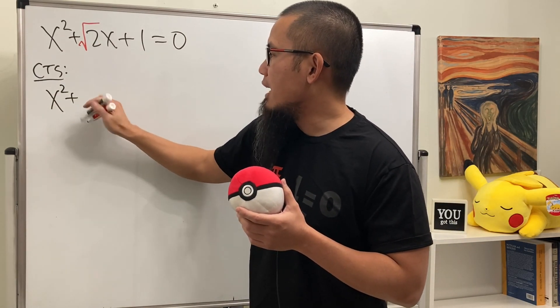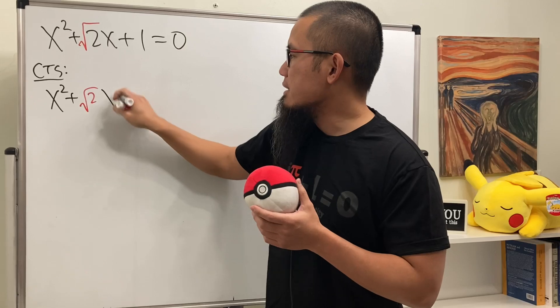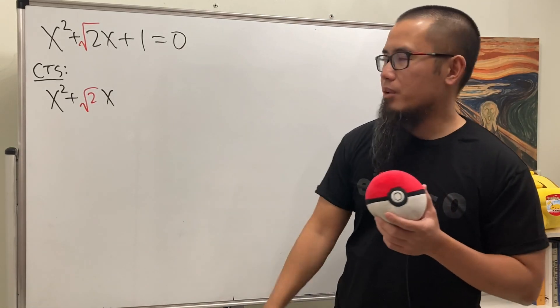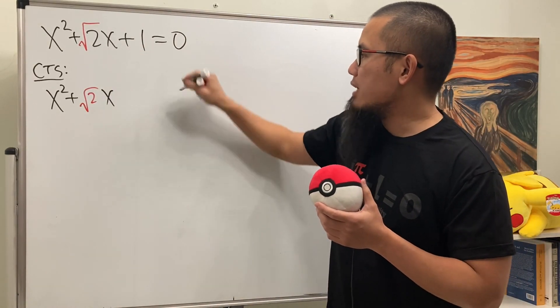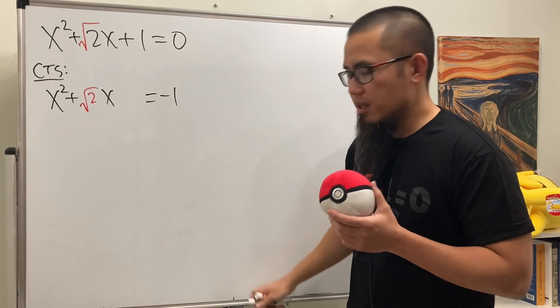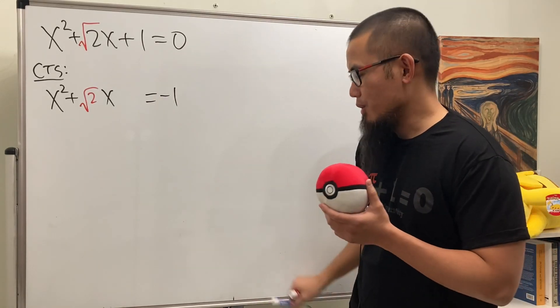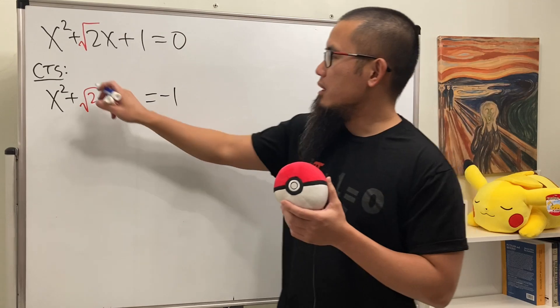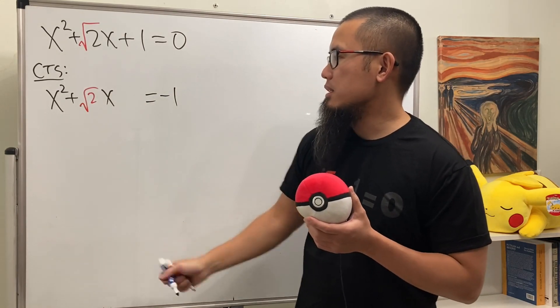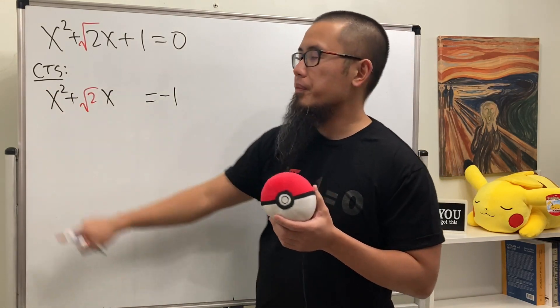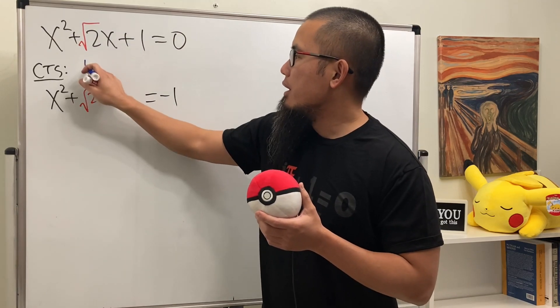We have x squared plus square root of 2x. And leave a space for the magic number. So we put a 1 to the other side, so this is going to be negative 1. What's the magic number? Well, let me show you. The little formula to get a magic number is this. After we have a 1 right here, look at the b value. Take half of that.